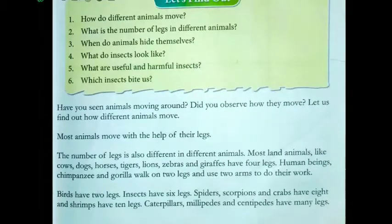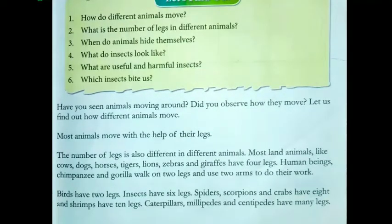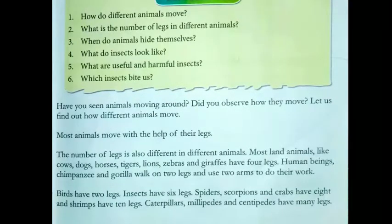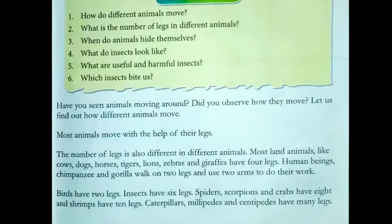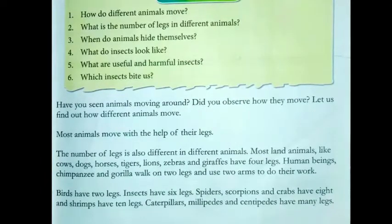Jitne bhi land animals hote hai jaise ki cow, dog, horses, tiger, lion, zebras and giraffe — inke 4 legs hote hai. Human beings, chimpanzee or gorilla ke kitne legs hote hai? Two legs hote hai jisse woh walk karte hai, aur two arms hote hai jisse woh apna kaam karte hai.